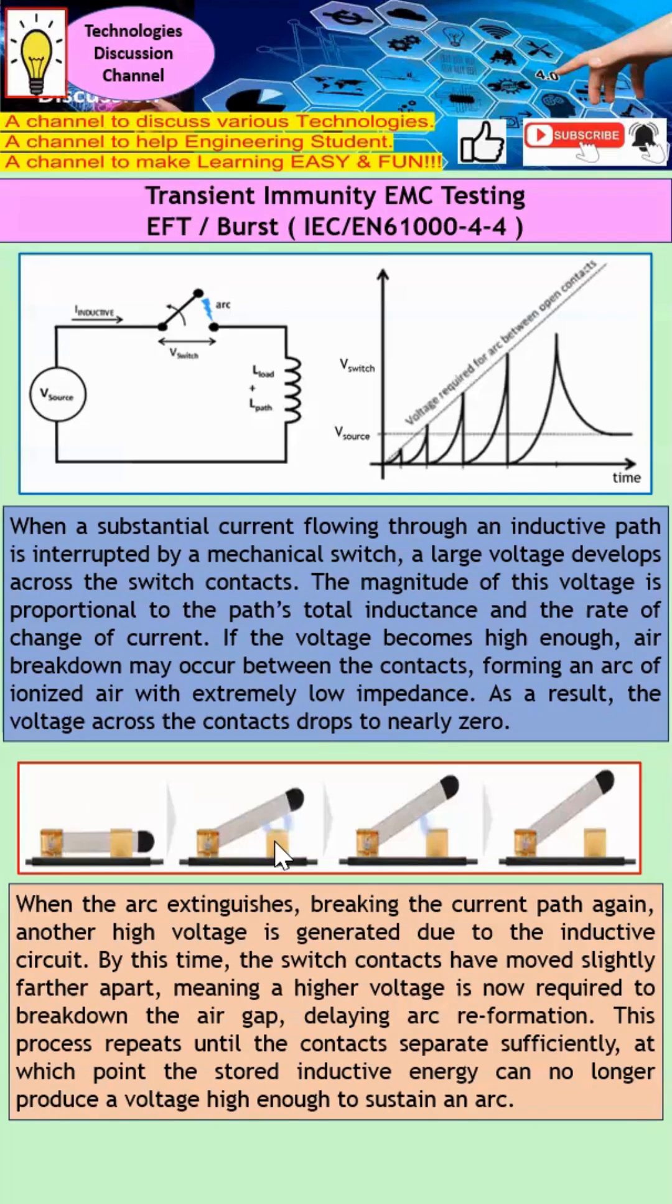By this time, the switch probably has moved further away, which means that a higher voltage is now required to break down this air gap. Hence, they actually delay this arc reforming thing. This process continues until the switch is further away, and hence, there is not enough voltage big enough to create this arcing. This is why we need to do this test.